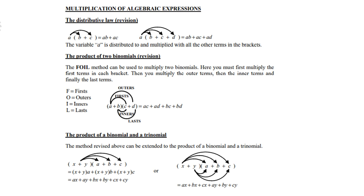Then you multiply the outer terms and then the inner terms in the final last term. F is first, then O is outer, I is inner, and L is last. So therefore, A times C is AC, A times D is AD, B times C is BC, and B times D is BD.